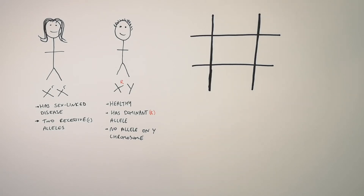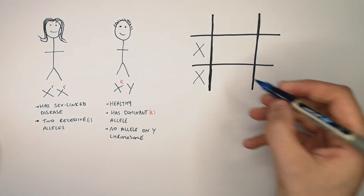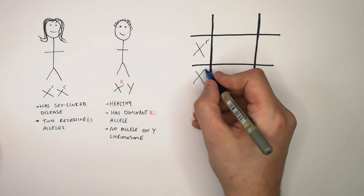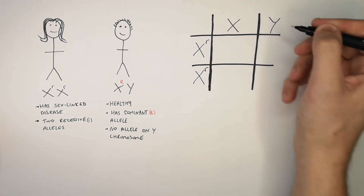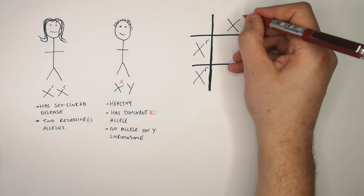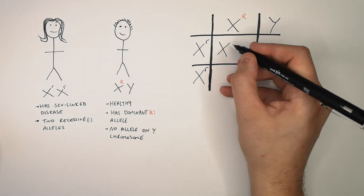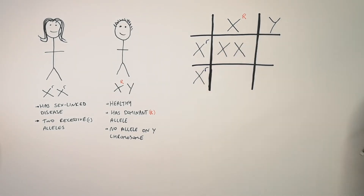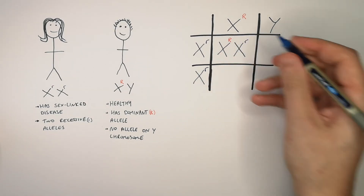Pause here to determine the percentage chances of which children will have the disease. The possible gametes the woman will have will both carry the recessive allele for the disease, whereas the man's gametes can be X or Y, and his X chromosome carries the allele for no disease. The first child will be XX — a girl — inheriting the dominant allele from dad and the recessive allele from mum.